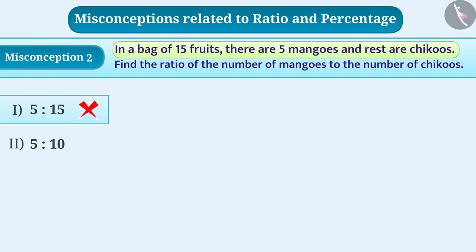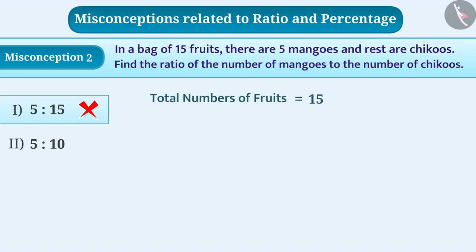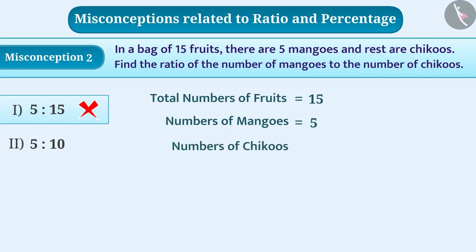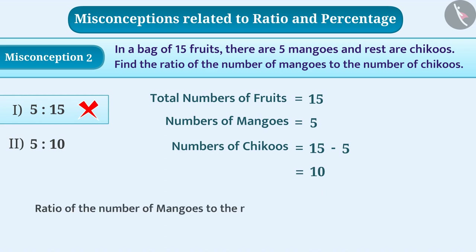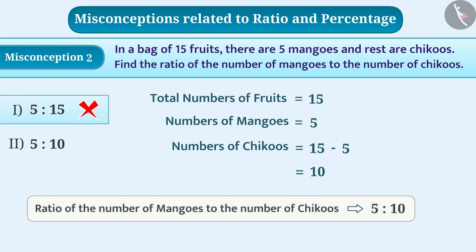Here, 15 is the total number of fruits, from which 5 are mangoes. So the number of chikus is 15 minus 5, which equals 10. Therefore, the ratio of the number of mangoes to the number of chikus is 5 : 10, and option 2 is the right answer.